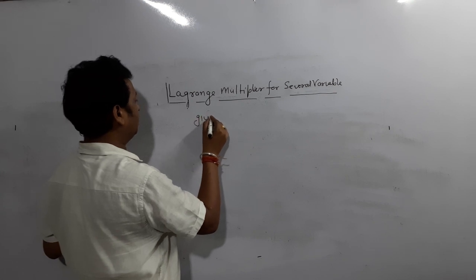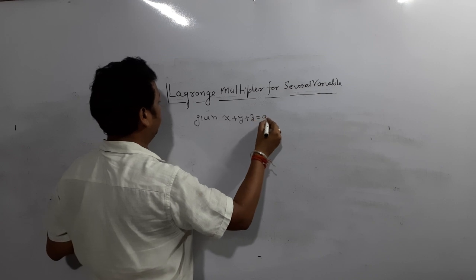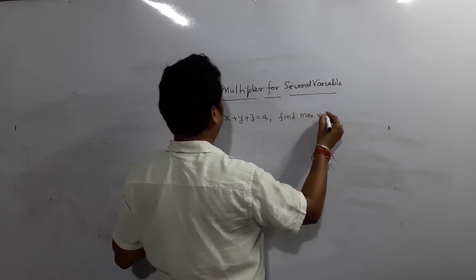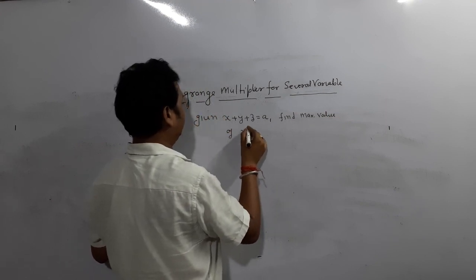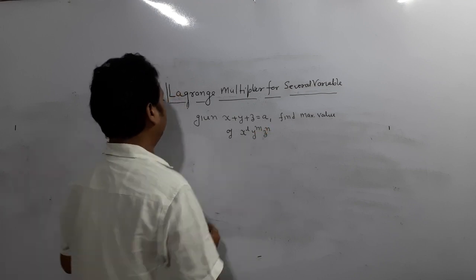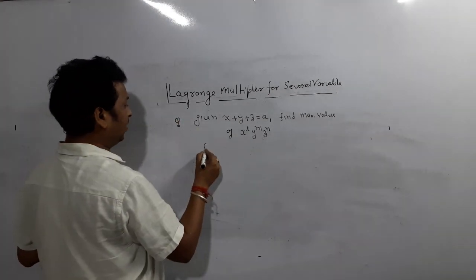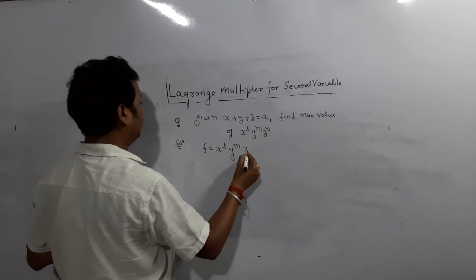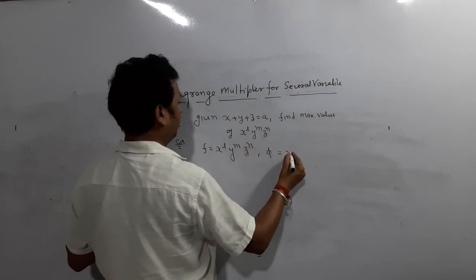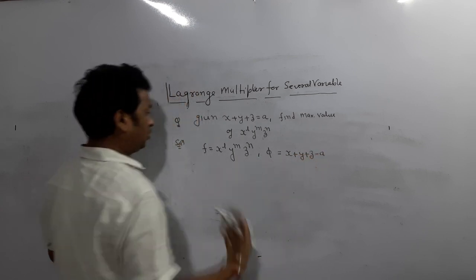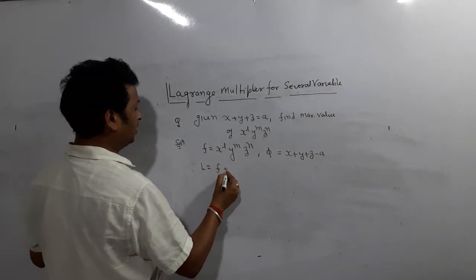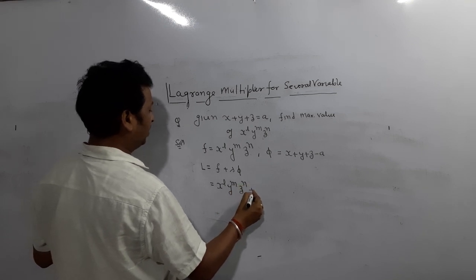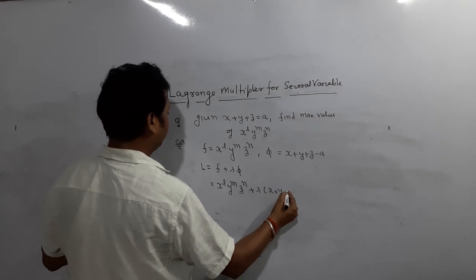Now let's solve one more question. Given x + y + z = a, find the maximum value of x^l * y^m * z^n. So here f = x^l * y^m * z^n and phi = x + y + z - a. Once you know f and phi, write the Lagrangian: L = f + lambda * phi = x^l * y^m * z^n + lambda(x + y + z - a).